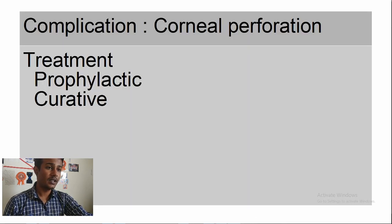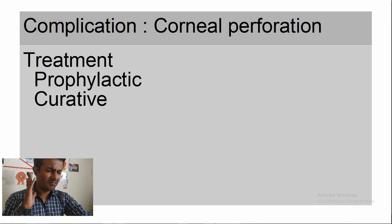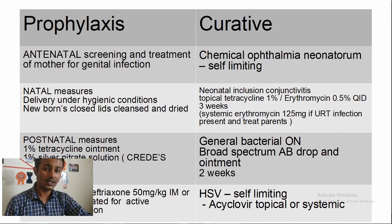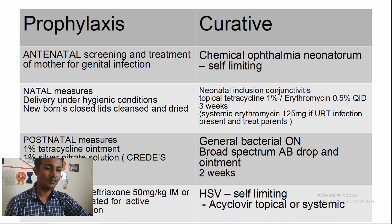The main complication is corneal perforation. Treatment is either prophylactic or curative — either prevent it or deal with it properly. For prophylaxis: antenatal screening of the mother, and if she's infected, treat her genital tract infection before delivery so the baby is not infected during its journey through the birth canal. Maintain proper hygienic conditions — the newborn's eyelids should be cleansed and dried.